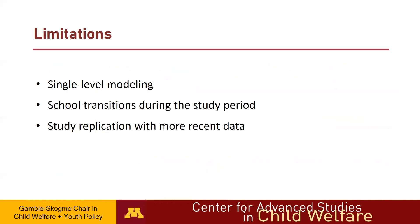This study has several limitations. First, the study estimated the model as a single-level model, but future studies replicating this study would benefit from multi-level modeling as it would provide more robust information considering the nested data structure. Second, given that the study uses longitudinal data, it is possible that students experience transition of schools during the six academic years, so since the study included school-level variables, the results related to those school-level variables should be interpreted with caution. Third, the most recent data accessible for this study was through the 2013-2014 school year, and future studies should examine whether the trends and relationships found in this study have continued into the present or if they have changed in any way.